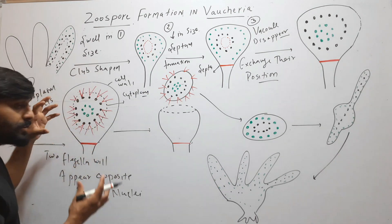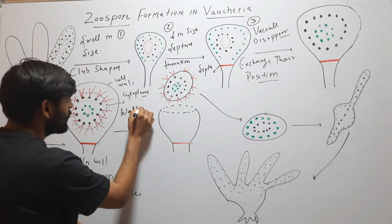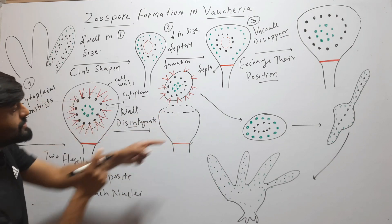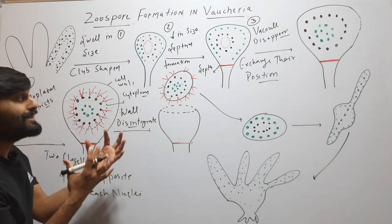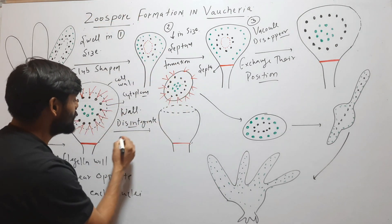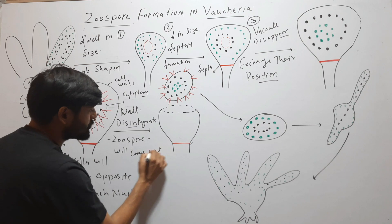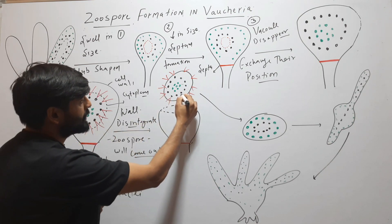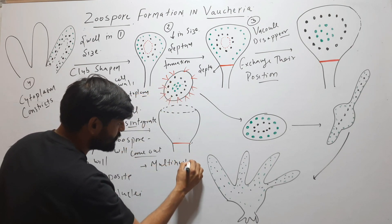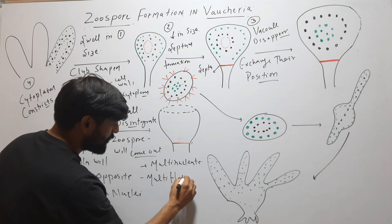After formation of the flagella, the wall will disintegrate. The upper wall disintegrates, and after disintegration the zoospore will come out. This zoospore is multi-nucleate — you can see that there are many nuclei — and also multi-flagellated.